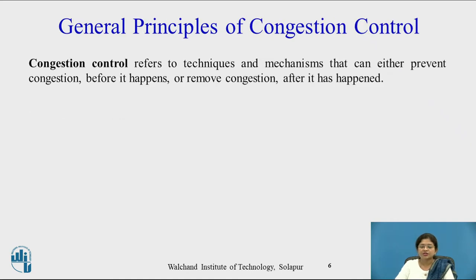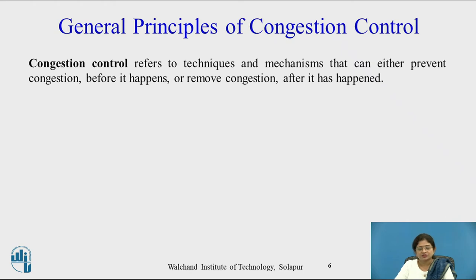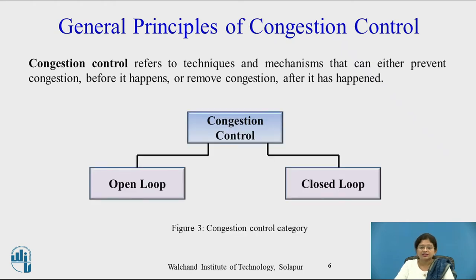Now look at the general principles of congestion control. Congestion control refers to the techniques and mechanisms that can either prevent congestion before it happens or remove congestion after it has happened. On that basis, congestion control is divided into two categories: open loop and closed loop.